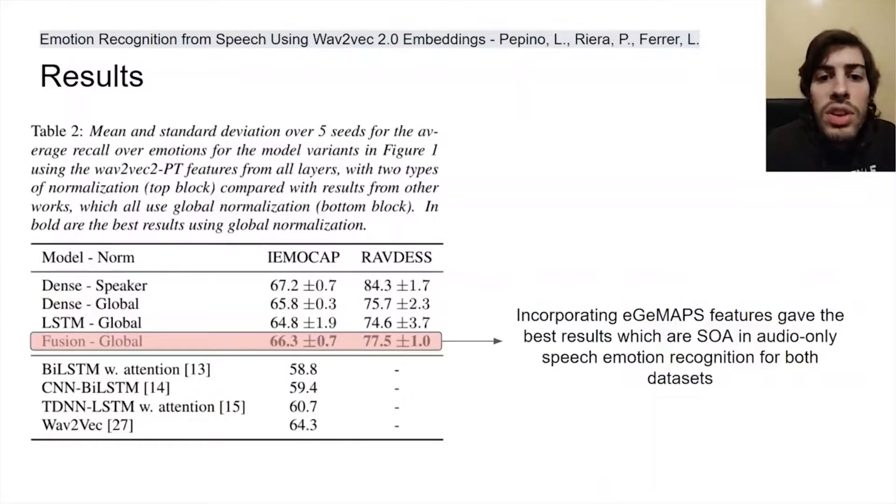The fusion model, which also incorporates eGeMAPS features, was the best and reached state-of-the-art results in IEMOCAP and RAVDESS. Our hypothesis is that some prosody information that is present in eGeMAPS might not be present in Wav2Vec2 features.